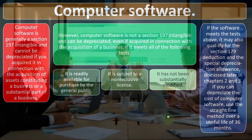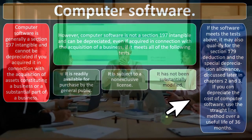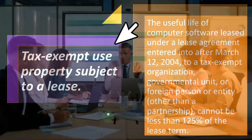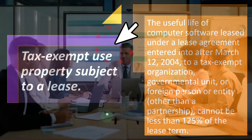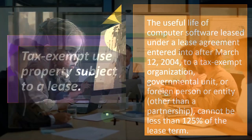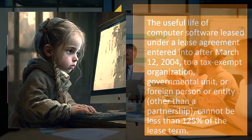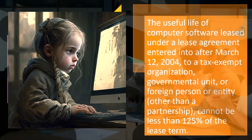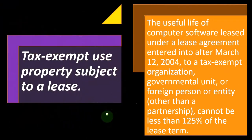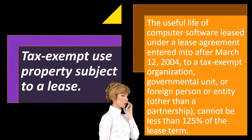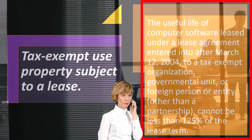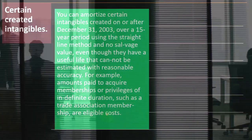If you can depreciate the cost of computer software, use the straight line method over a useful life of 36 months. For tax-exempt use property subject to a lease, the useful life of computer software leased under a lease agreement entered into after March 12, 2024, for a tax-exempt organization, governmental unit, or foreign person or entity other than a partnership, cannot be less than 125% of the lease term.